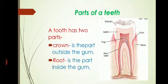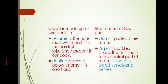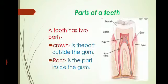Now the second part of tooth is root. Root again consists of two parts: gum and pulp. Gum protects the teeth from outside and pulp is soft. It lies below the dentine. It forms the central part of the tooth which is called root canal. Inside this root canal, there lie various blood vessels and nerves. So this is all about the parts of a tooth.